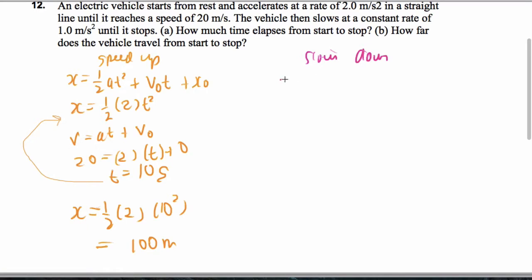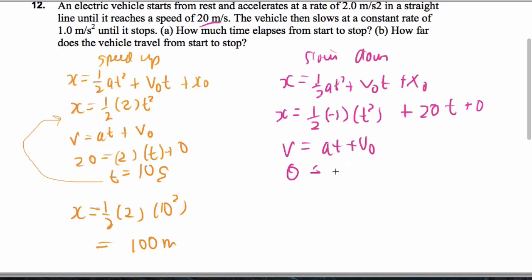Going to the end. So I'll just do the following. x equals 1 half at squared plus v naught t plus x naught. So let's just see what we got here. I don't know how far it's going to go until it stops. So 1 half times negative 1 times t squared plus v naught. It's at 20 meters per second when it's starting to slow down times t. I'm going to leave this at zero for now. What else we got? So let's get a time. v equals at plus v naught. So 0 because it stops equals negative 1 times unknown t plus the speed of 20.